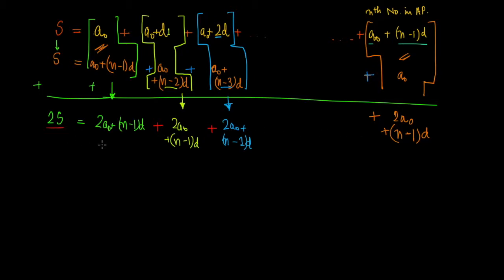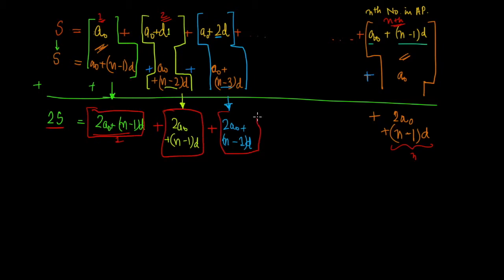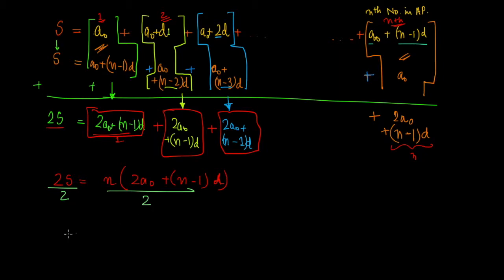Since every pair sums to the same quantity 2a₀ + (n−1)D, and there are n such pairs — the first term, second term, through the nth term — the quantity has been repeated n times. Therefore, 2S equals n times the quantity 2a₀ + (n−1)D.